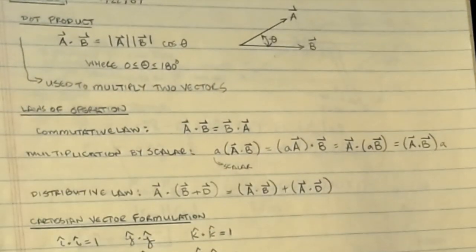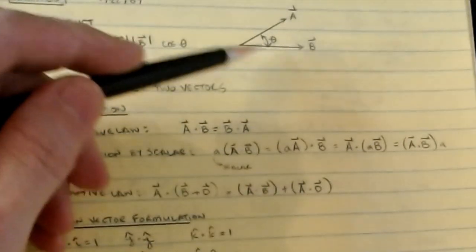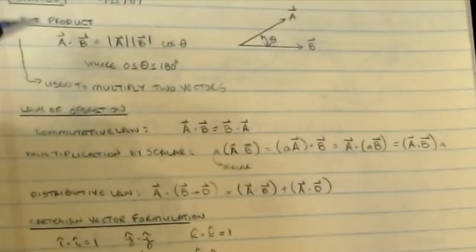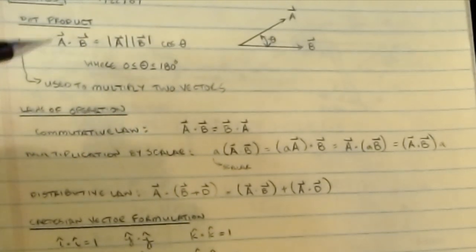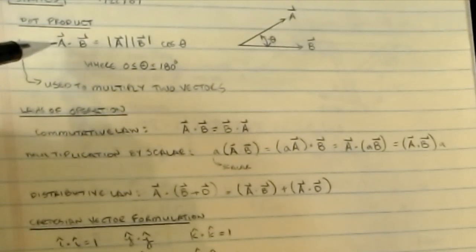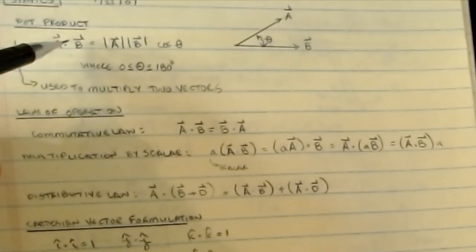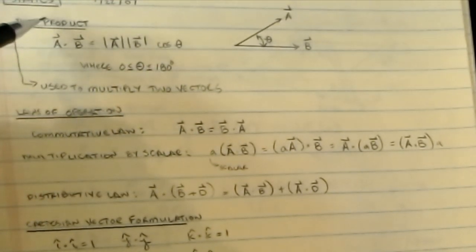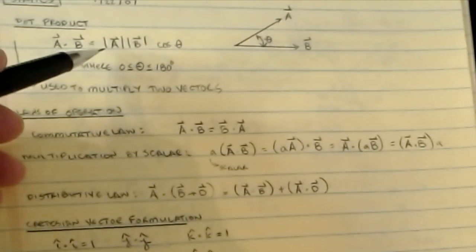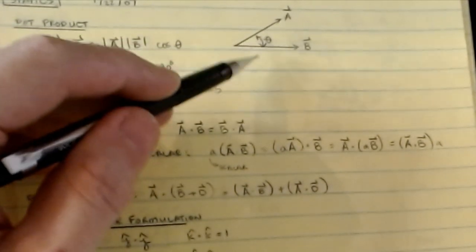The first one we're going to talk about is the dot product. We have two vectors A and B oriented with some angle theta between them. The dot product operation takes place between two vectors, and the key identity is that A dotted into B equals the magnitude of A multiplied by the magnitude of B multiplied by the cosine of theta, where theta is the angle between A and B.